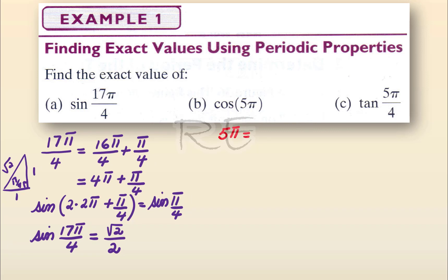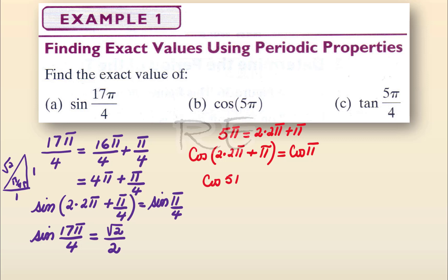5 pi is equal to 4 pi plus pi, which is 2 times 2 pi plus pi. So cosine of 5 pi equals cosine of 2 times the period plus pi, which is equal to cosine of pi. Looking at the unit circle, for pi the coordinates are negative 1 and 0, and cosine is the x-coordinate. So cosine of 5 pi is equal to negative 1.